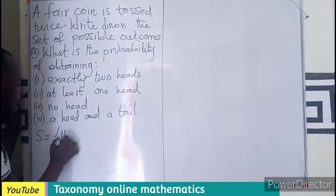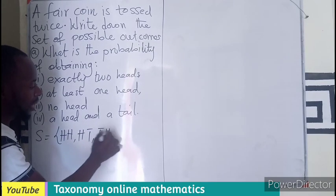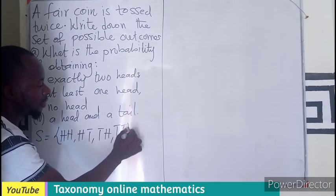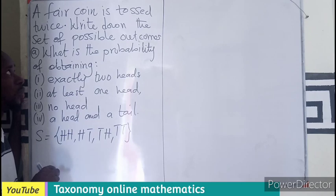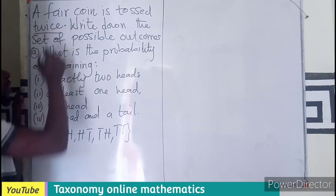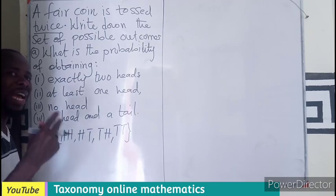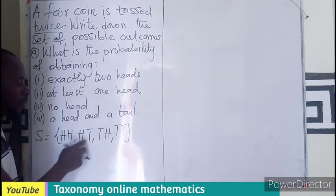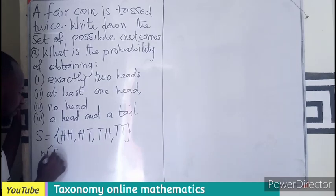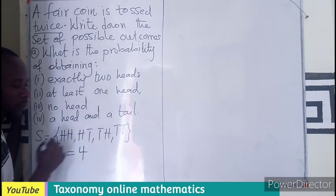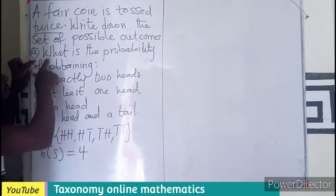The possible outcomes are: a head and a head, a head and a tail, a tail and a head, and a tail and a tail. These are the four possible outcomes. When a coin is tossed twice, the total number of outcomes is 2 to the power of 2, which equals 4. So the number of elements in the sample space is 4.